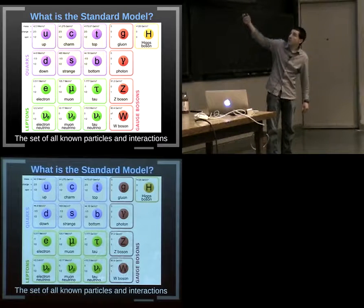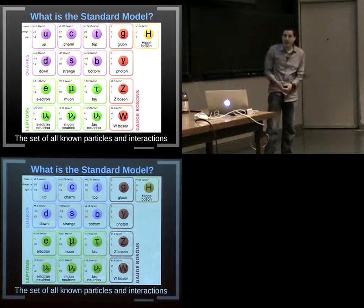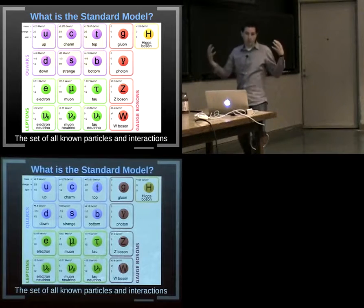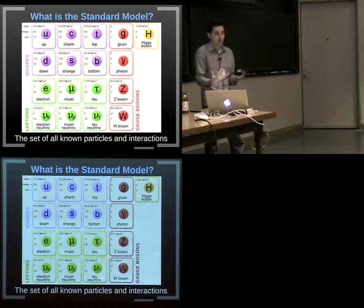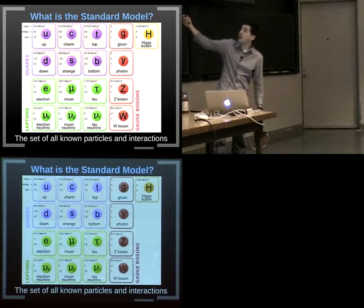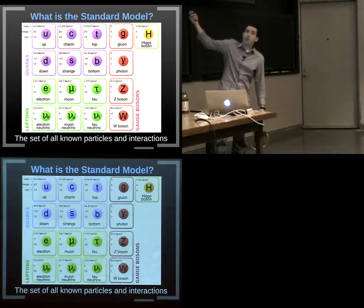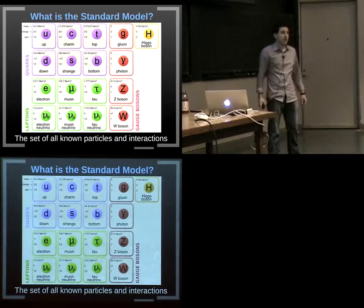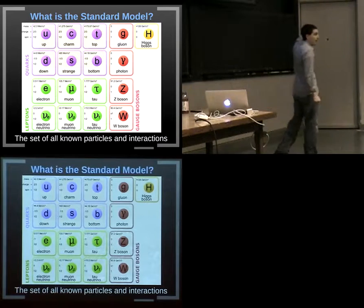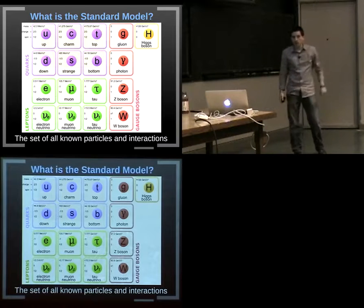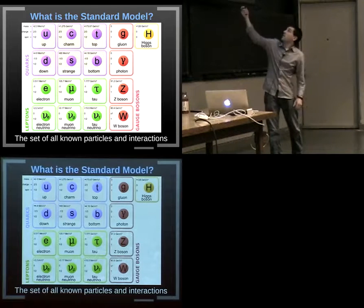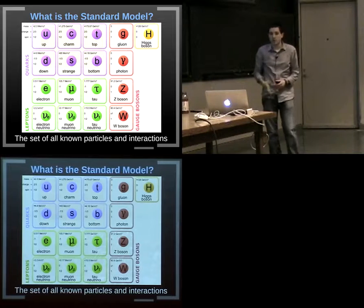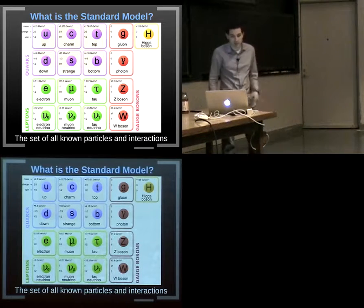On top of those fermions, there are the gauge bosons, which control the forces between particles — how the electron interacts with the quarks and how quarks interact with each other. There's the photon, responsible for the electromagnetic interaction, and the Z and W bosons responsible for the weak force.